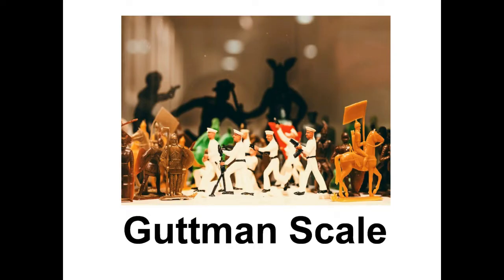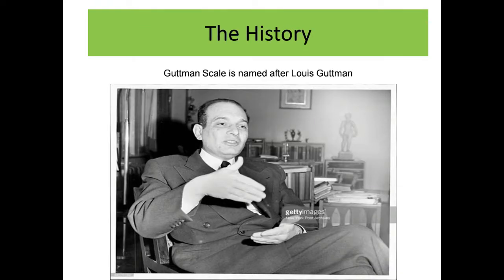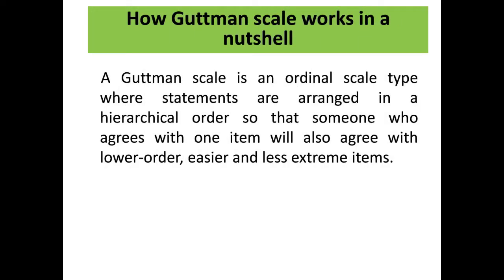Now let us see what is meant by the Guttman scale. A Guttman scale is an ordinal scale type where statements are arranged in a hierarchical order, so that someone who agrees with one item will also agree with lower-order and less extreme items. In the social sciences, the Guttman scale measures how much positive or negative attitude a person has towards a particular topic. The items are arranged hierarchically so that agreement with a higher-order item implies agreement with all lower-order items as well.